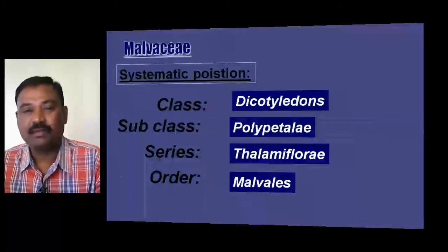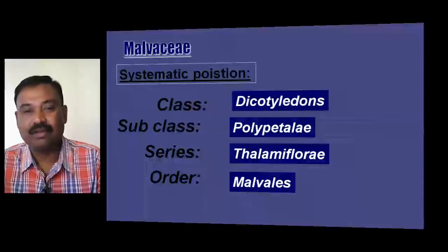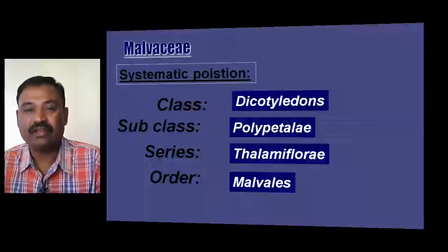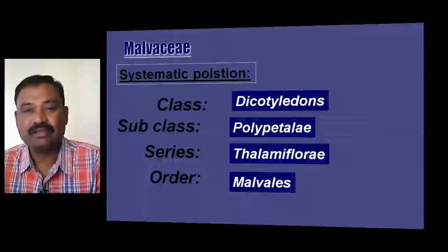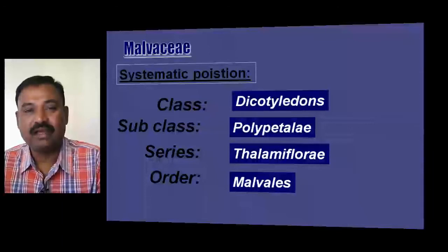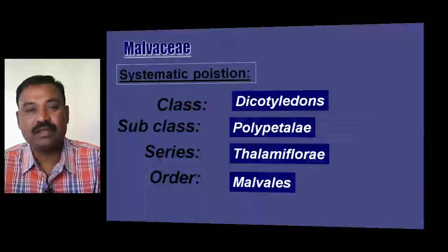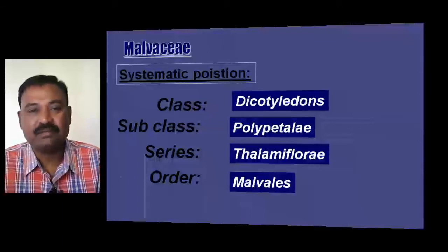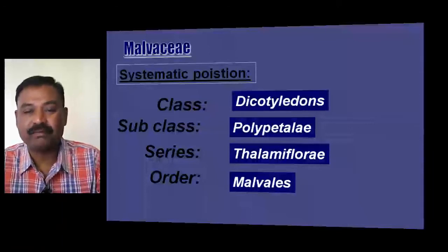Subclass Polypetalae. The petals of Malvaceae members are unfused, not united. Ununited petals are present in the flower, and because of this, Malvaceae is placed in subclass Polypetalae.